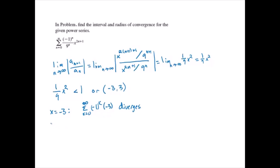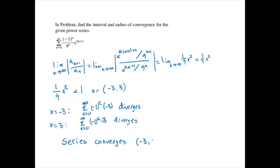And at x equals 3, the sum from k equals 0 to infinity of negative 1 to the k times 3 diverges also using the nth term test. So the series converges on the open interval negative 3 to 3.